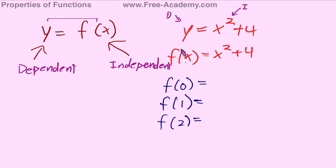Using our relationship that y equals f of x, we can also write that equation as f of x equals x squared plus 4. And again, x is still our independent variable. In this case, f of x is our dependent variable.